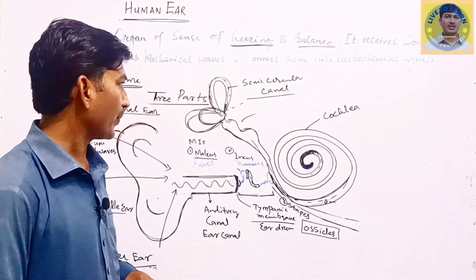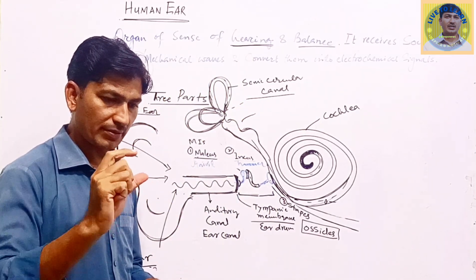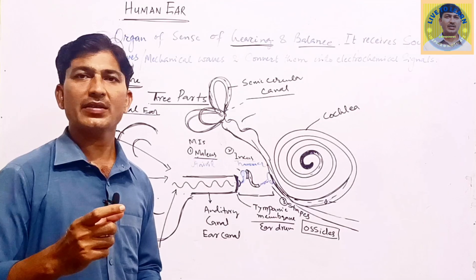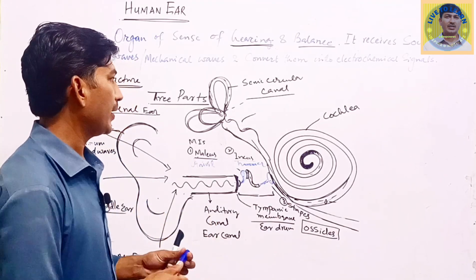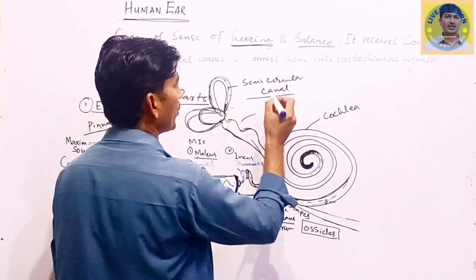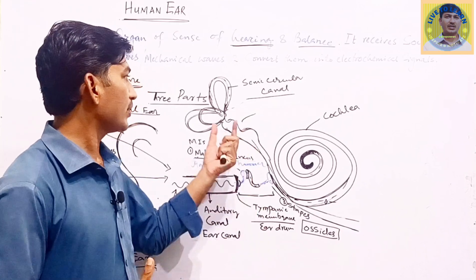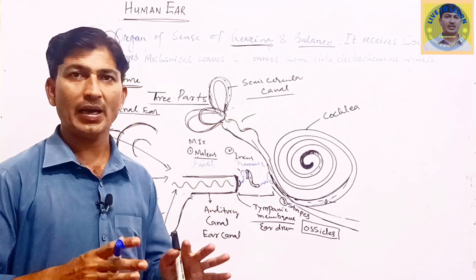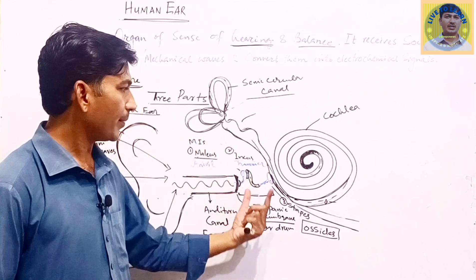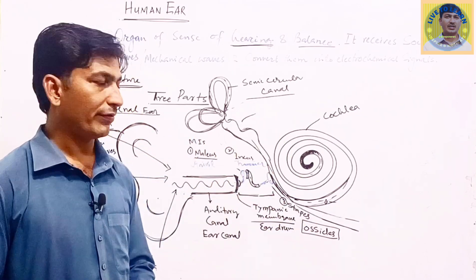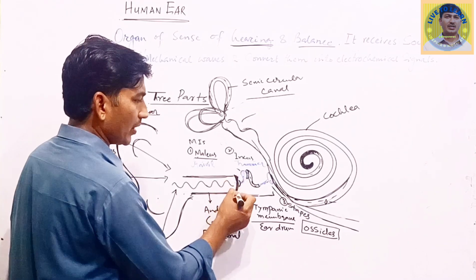There are three semicircular canals — not fully circular, but three semicircular canals — and these are filled with fluid inside. This fluid helps us in keeping the body's balance. When we are standing in an imbalanced position, this fluid vibrates and signals are sent to the human brain, and that's how we detect that we are not standing in a balanced position. So the fluid inside the semicircular canals helps us in keeping the body's balance.